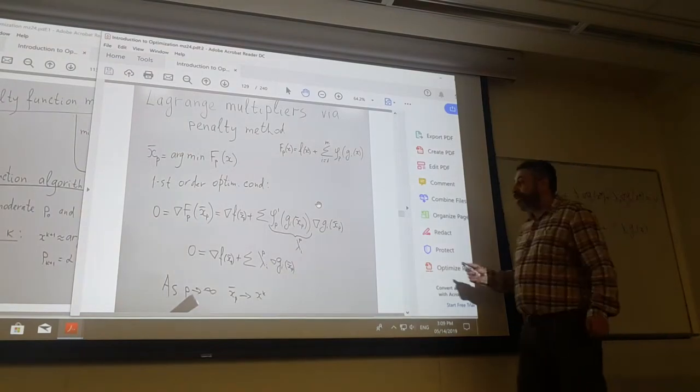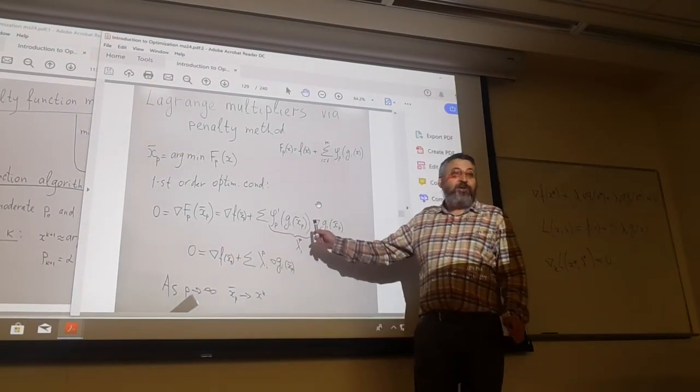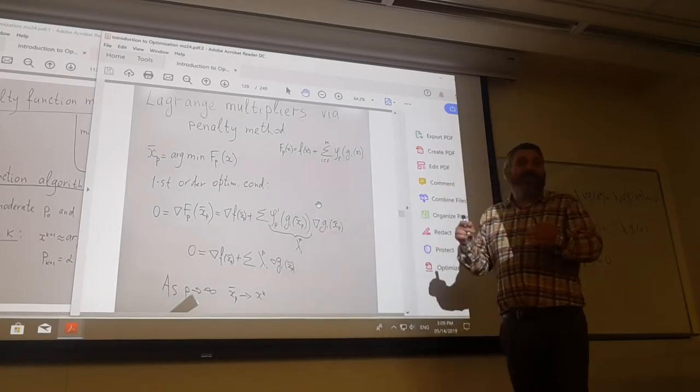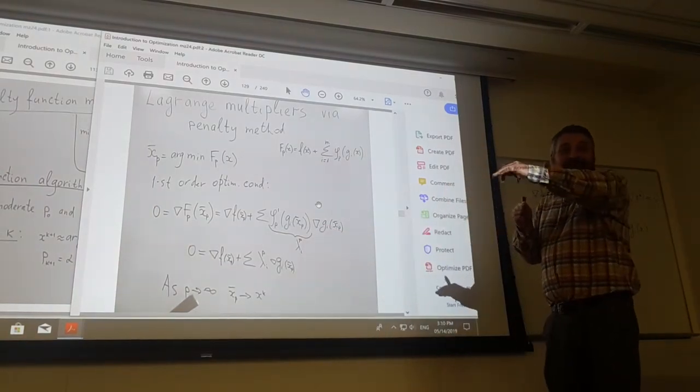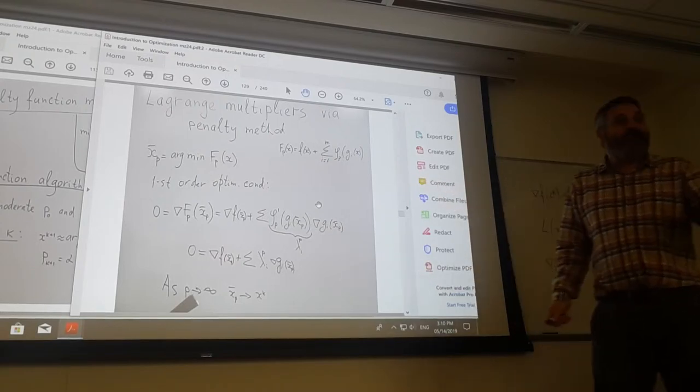So the derivatives for active constraints are not 0. The opposite - if you are inside the feasible area, the penalty becomes flat and its derivative is zero.